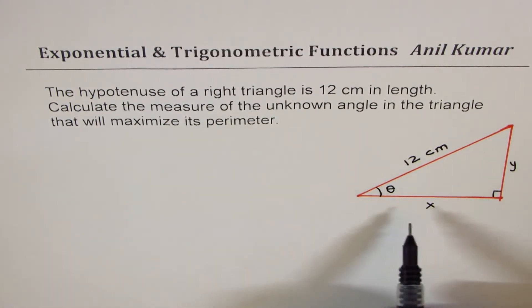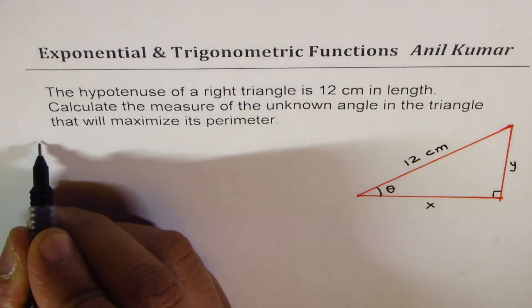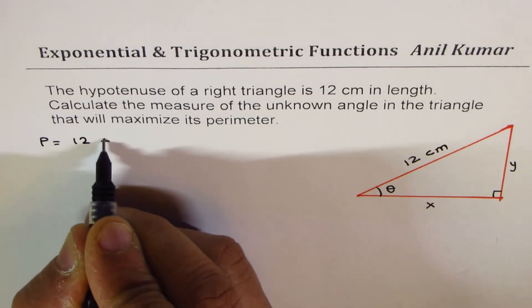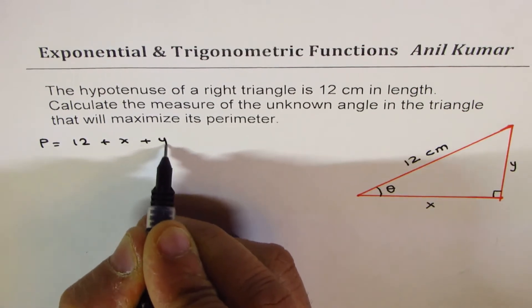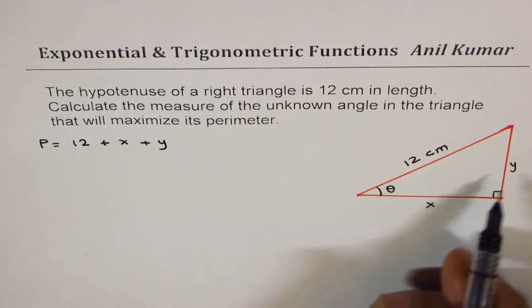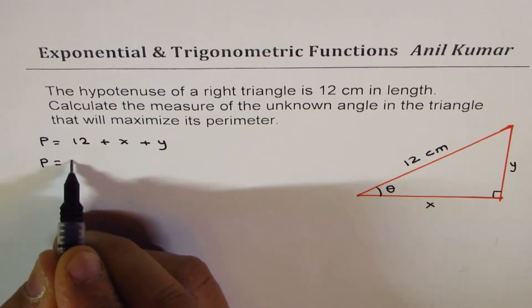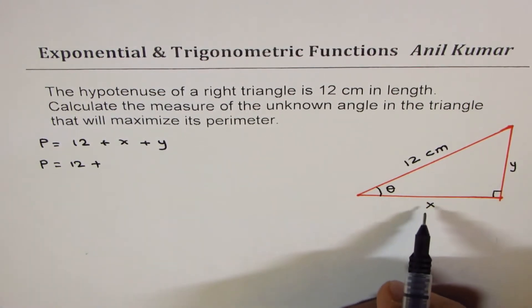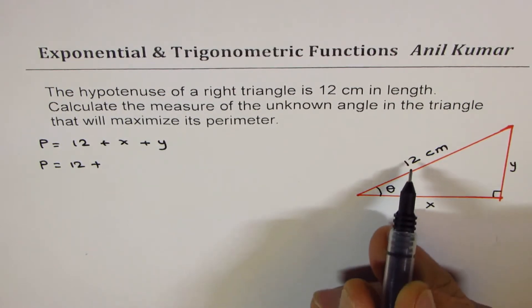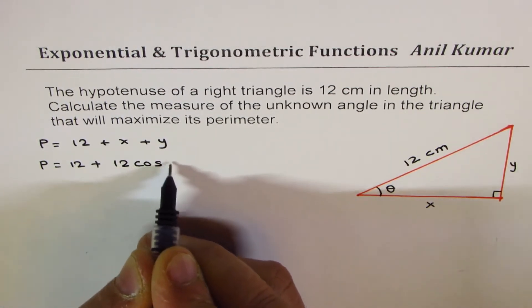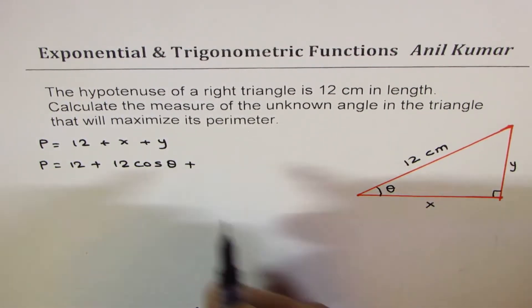Now, perimeter is sum of sides, so we can write perimeter P as equal to 12 + x + y. We could write both x and y in terms of theta, so we can write perimeter as equals to 12 plus, now that is the adjacent side which has to be smaller than the hypotenuse, it becomes 12 cos θ plus y.